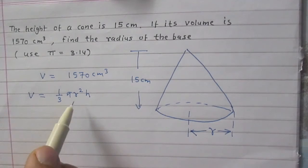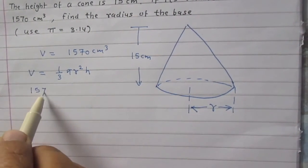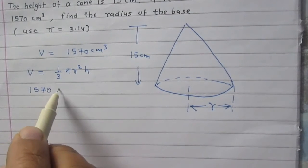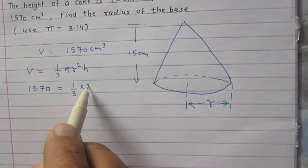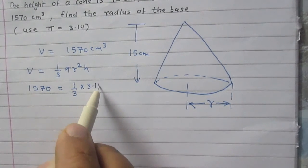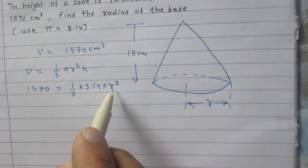Using this relation, the volume of the cone which is 1570 cm³ equals (1/3) × π × r² × h. That is (1/3) × 3.14 × r² × 15, where we don't know the value of r.